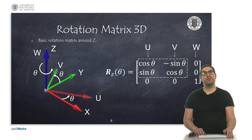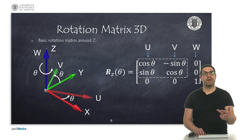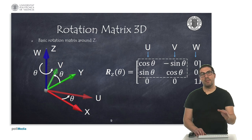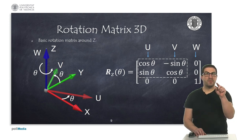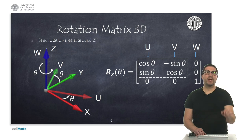Finally, if we apply a rotation around the z-axis, the u and v vectors are modified and affected. In fact, this rotation is the same as the 2D rotation matrix we saw before — specifically the 2x2 sub-matrix indicated in the slide.